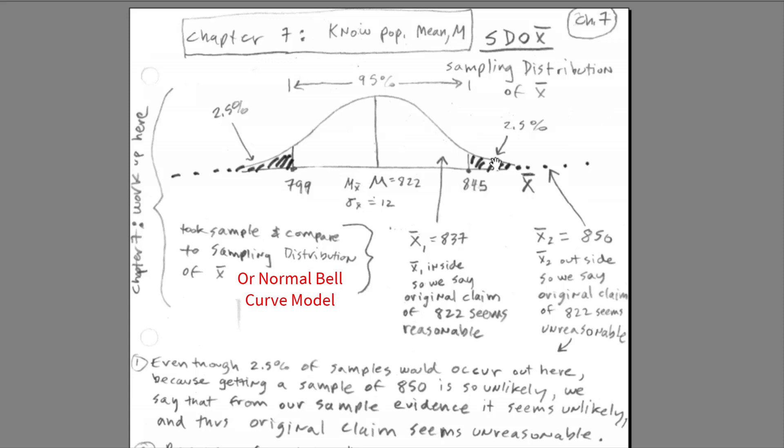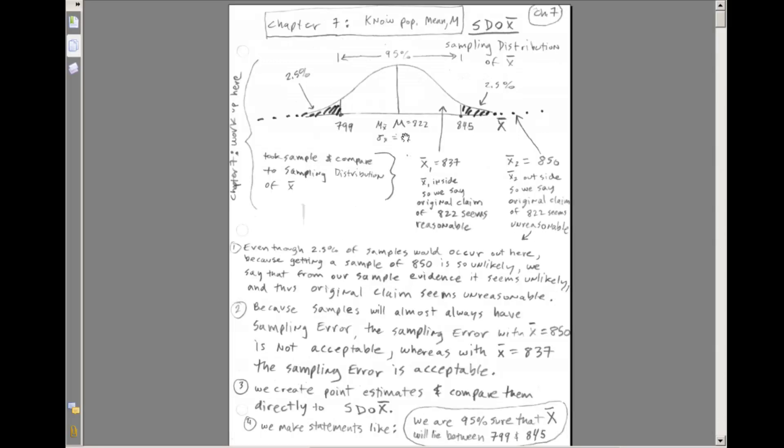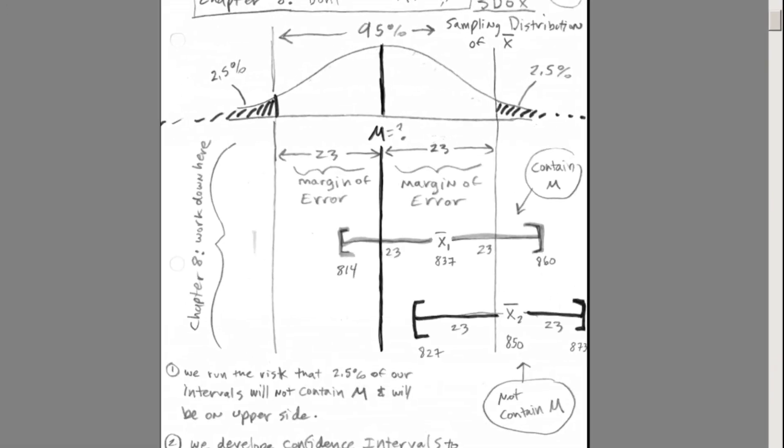However, if we got a value out here or down here, for example, if we got an X bar equals to $850, then the sampling error, the distance between these two, is so big we then say maybe this original claim is not reasonable. Now, very clear, and I have it written down here, the statements we made in chapter 7 are we believe that 95% of the X bars will lie between these two values. Chapter 7, we knew or had a good estimate of population mean.